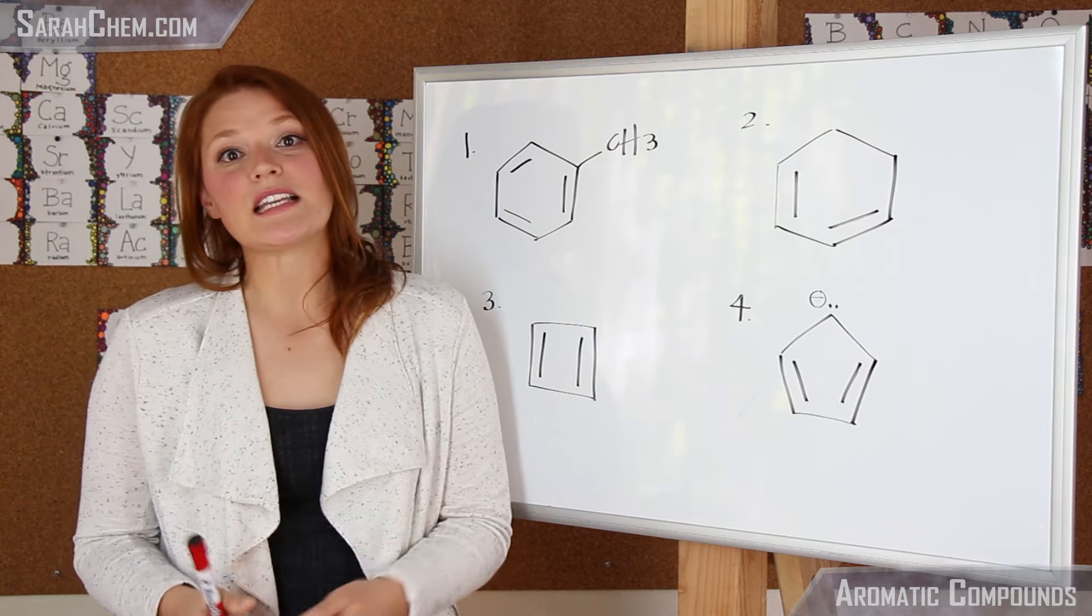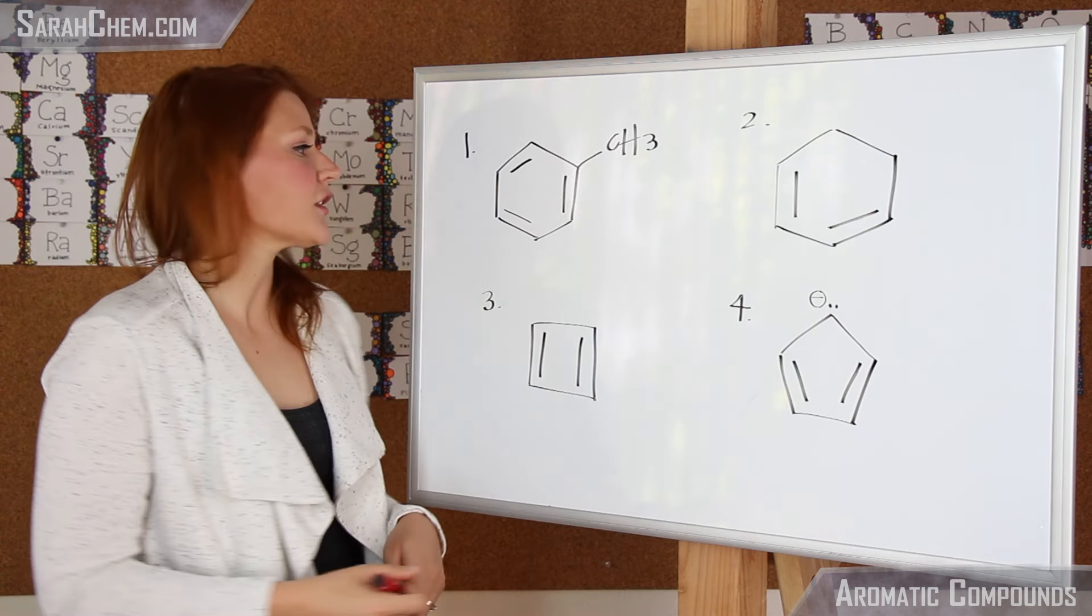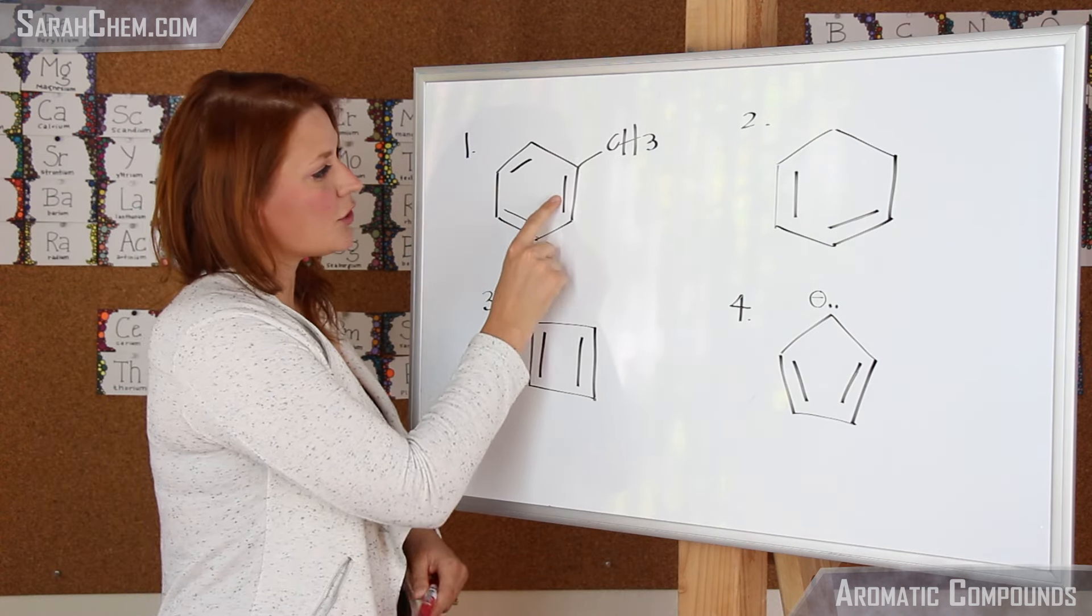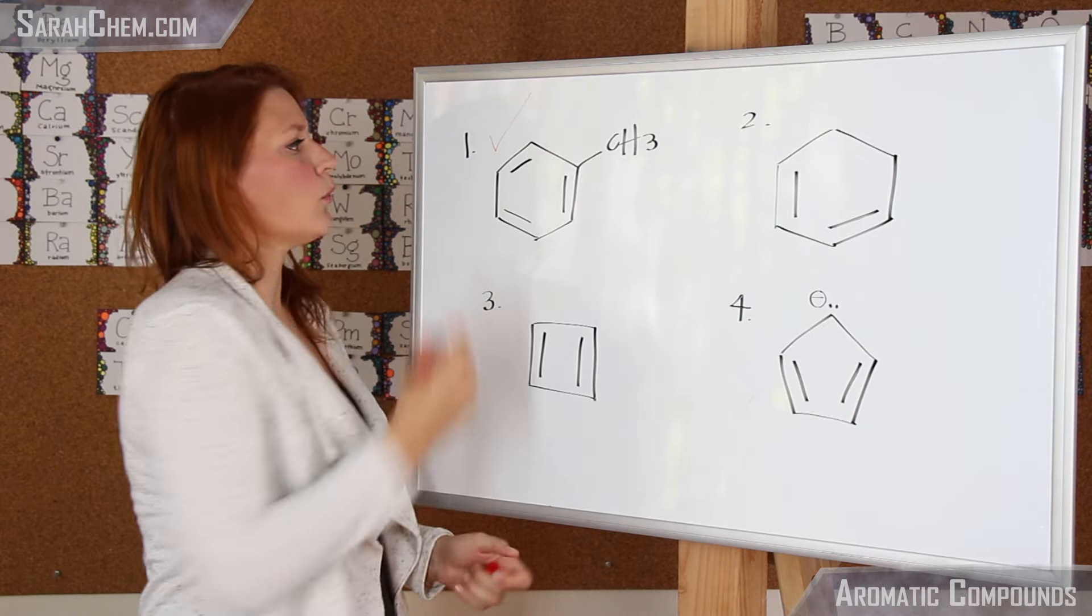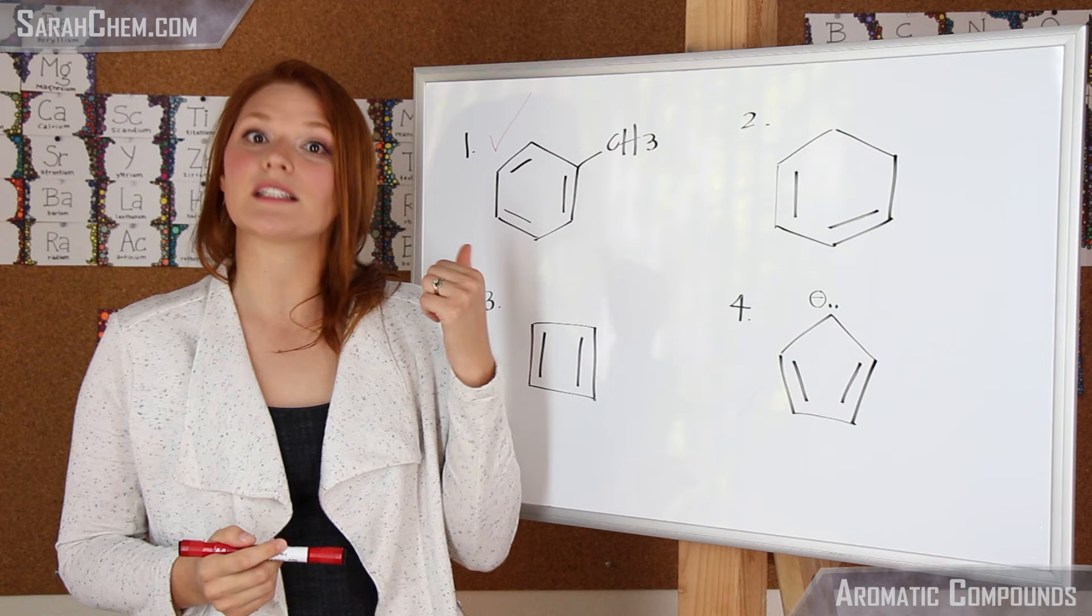The third rule is that we need to have an odd number of pi cloud electron pairs. So here we have one, two, three. So this one meets all three criteria, so this here would be an aromatic compound, a really stable compound.